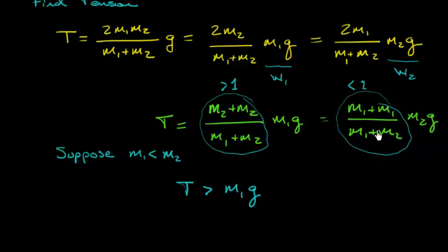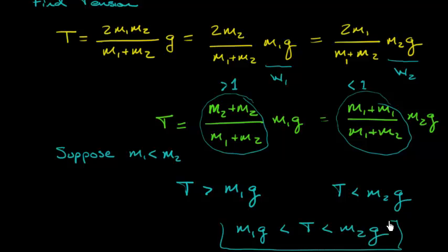Which means, I've got something less than one times m2g. So therefore, my tension has to be less than the weight of block number two. Putting both of these together, we find that tension has to be somewhere in between the weights of the two blocks. That's kind of an interesting result, I think. So, thought I'd point it out.